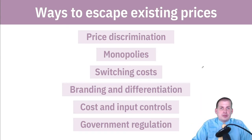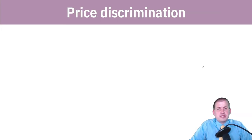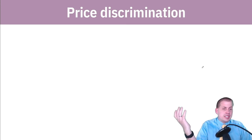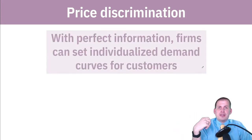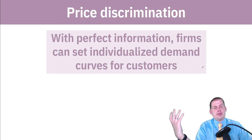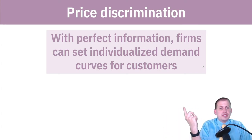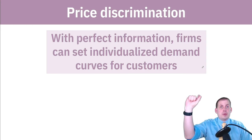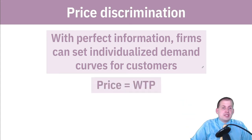Price discrimination is an economics term that sounds bad because we associate discrimination with racial or gender discrimination, but in this context it's not necessarily bad. All it really means is that you can sell things to people for different prices. If you have perfect information about people, instead of charging a prevailing market price, you can figure out how much each person is willing to pay and charge them exactly that willingness to pay.